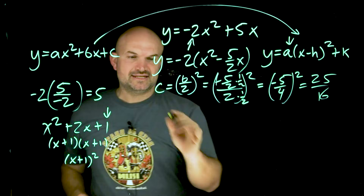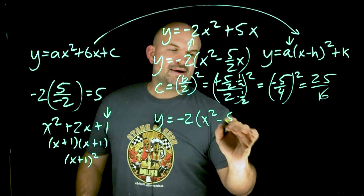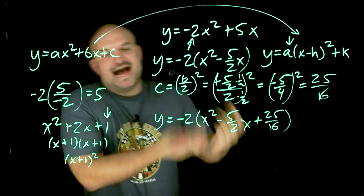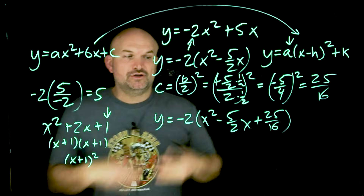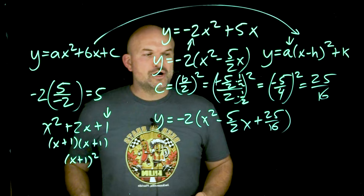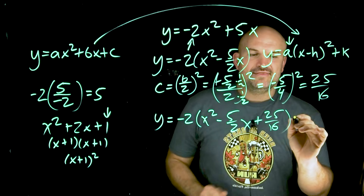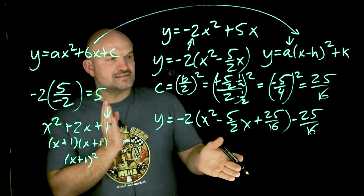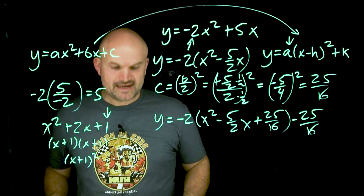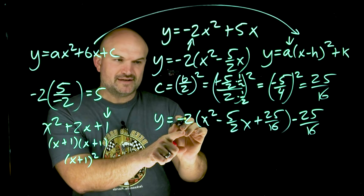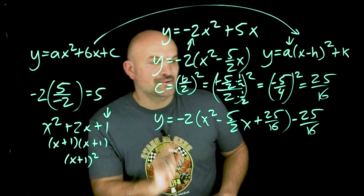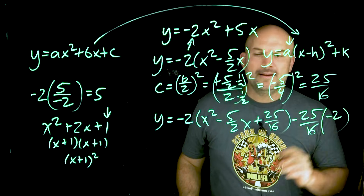So y equals negative 2 times the quantity x squared minus 5 halves x plus 25 over 16. But we can't just randomly add 25 over 16 to the right side without balancing the equation. I want to keep all work on the right-hand side, so if I add 25 over 16, I also have to subtract 25 over 16. However, since 25 over 16 is inside the parentheses being multiplied by negative 2, what I actually added was 25 over 16 times negative 2 — so I must subtract that full product as well.